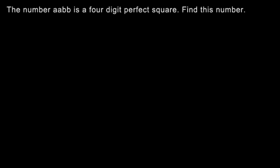The number AABB is a four-digit perfect square. Find this number. So let's call AABB, since it's a perfect square, let's say n squared equals AABB.